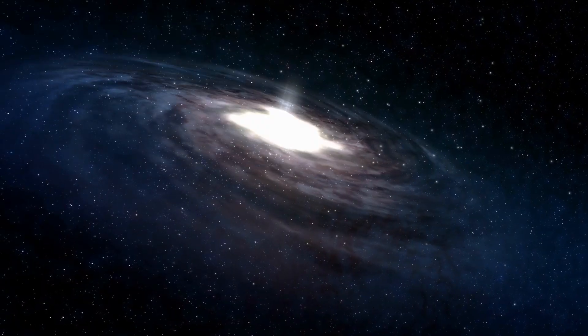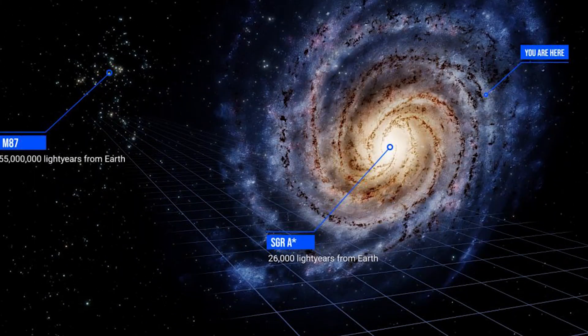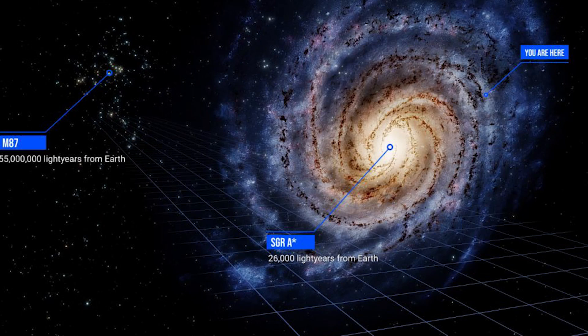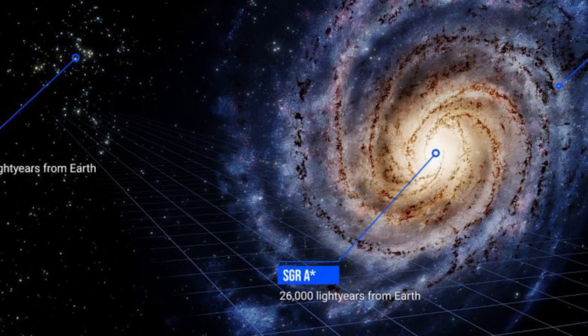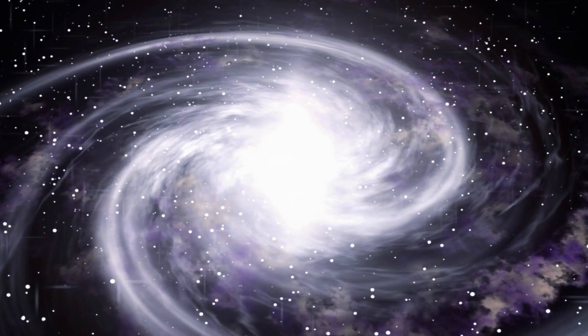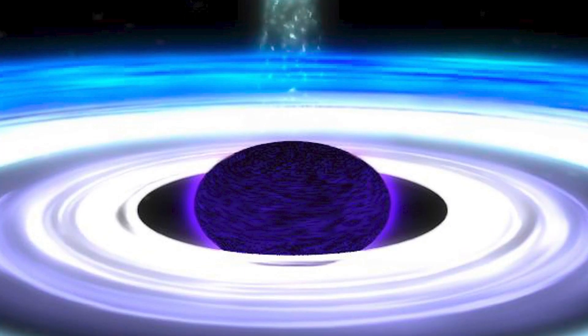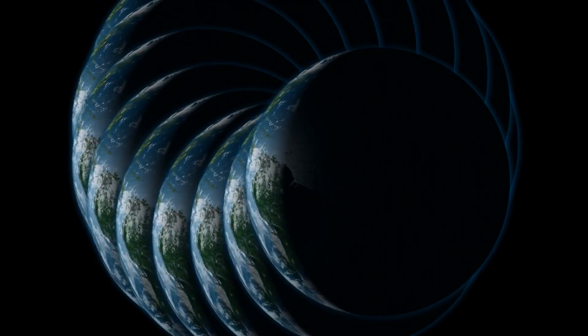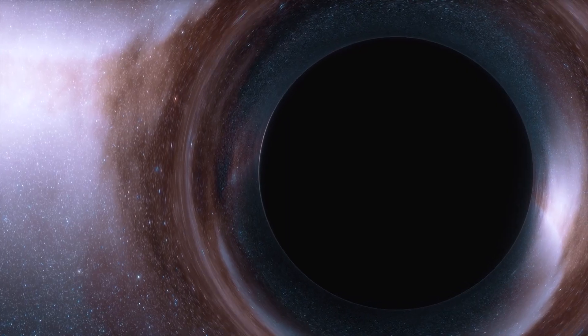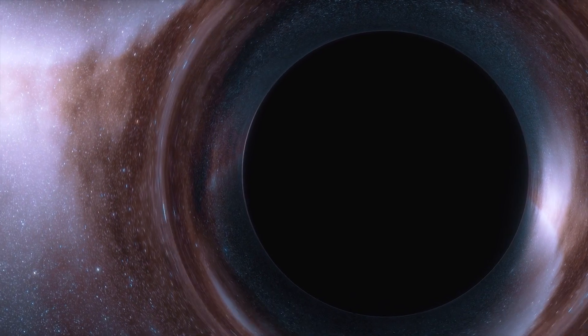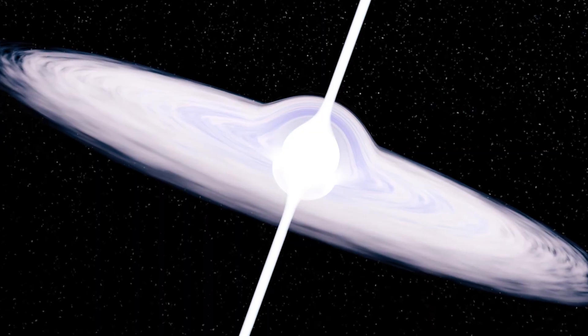For example, our very own Milky Way galaxy hosts a supermassive black hole known as Sagittarius A star, with a mass equivalent to roughly 4 million suns. It could fit within an extraordinarily large sphere capable of containing a few million Earths. Now that we have a somewhat good idea about black holes, what in the cosmos are white holes?